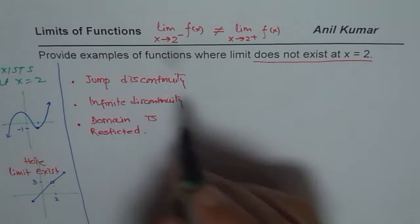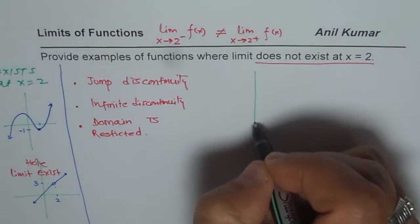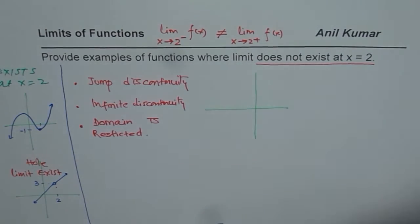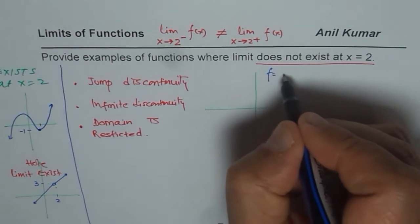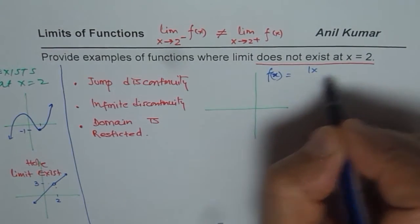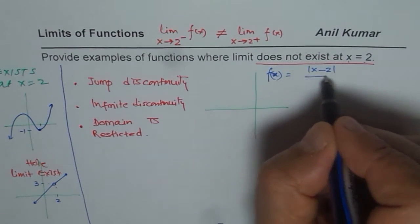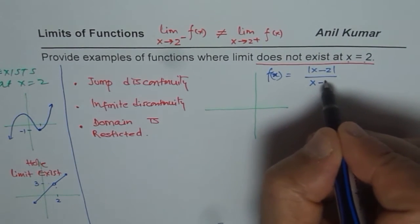Let me begin with jump discontinuity. A good example for jump discontinuity could be f of x equals to absolute value of x minus 2 over x minus 2.